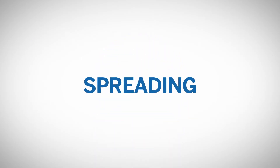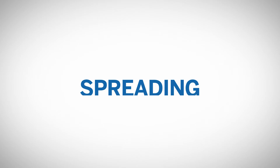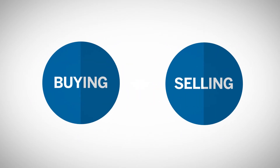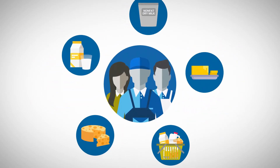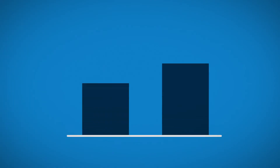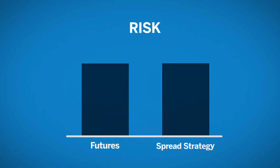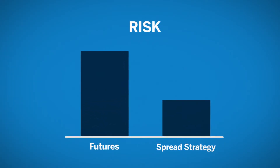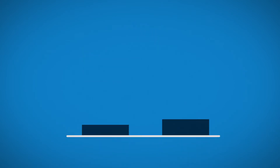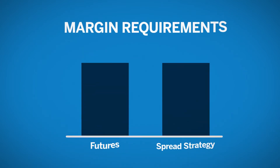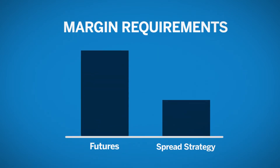Spreading — a trade in which you simultaneously buy one futures contract and sell another — is a commonly used trading strategy in the dairy markets. One reason is that spread strategies typically involve less risk than outright futures positions and, as a result, also tend to have lower margin requirements.